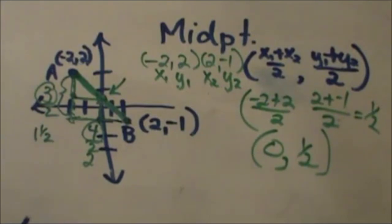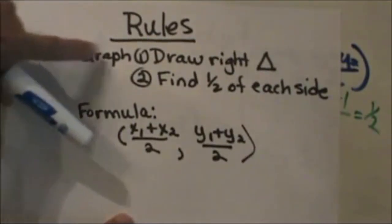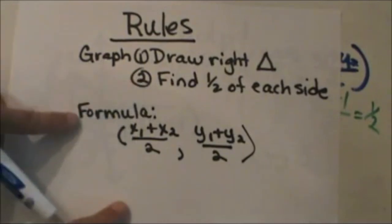So let us look at the rules of midpoint. We have two methods: graphing, draw your right triangle, then find half of each side, then you just connect those back to see exactly where that point is.